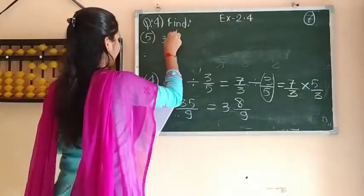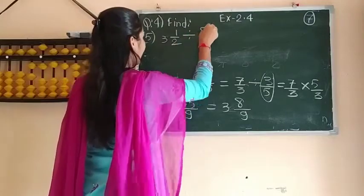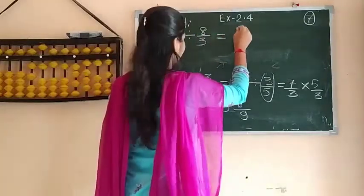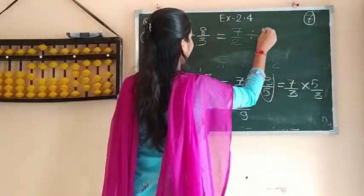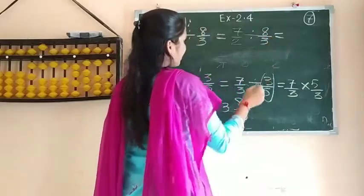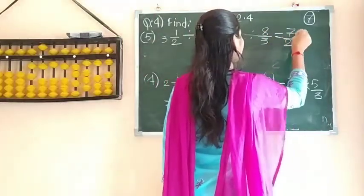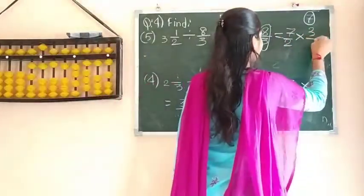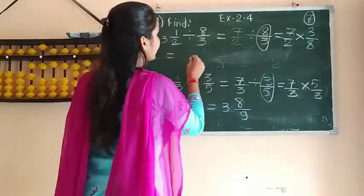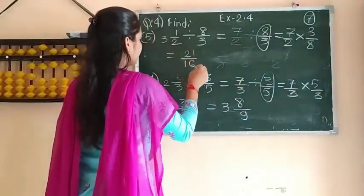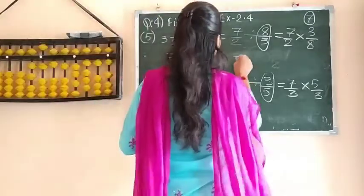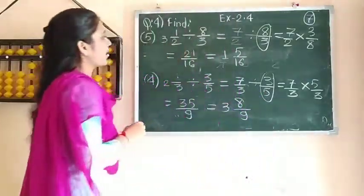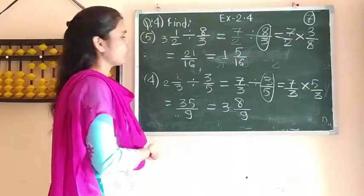Last, fifth one: 3 and 1 by 2 divided by 8 upon 3. Convert the mixed fraction: 3 times 2 is 6, plus 1 is 7, giving 7 upon 2 divided by 8 upon 3. Replace the division sign with multiplication and make the reciprocal of 8 upon 3, which is 3 by 8. Multiplying gives 7 threes are 21 upon 2 eights are 16. Converting to a mixed fraction: 16 goes once with remainder 5, so the answer is 1 and 5 by 16. In this way, question number 4 is completed.